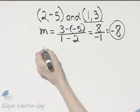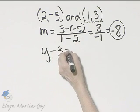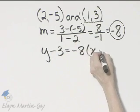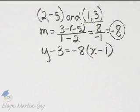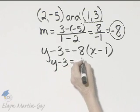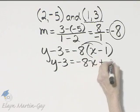That slope and my point-slope form is y minus the y value of 3 is equal to the slope negative 8 times x minus the x value of 1. Let's go ahead and distribute. That's y minus 3 is equal to negative 8x plus 8.